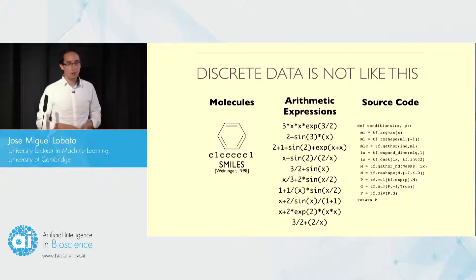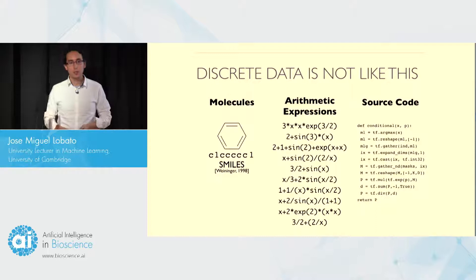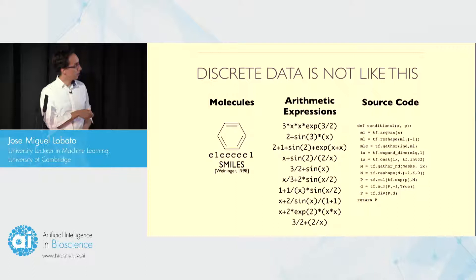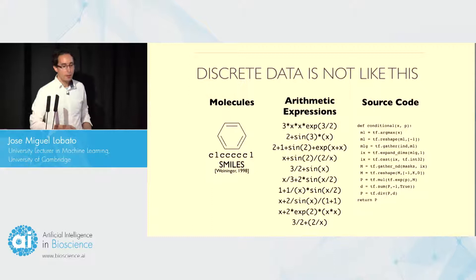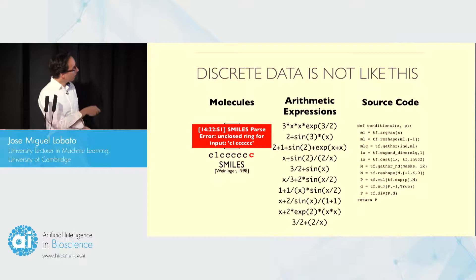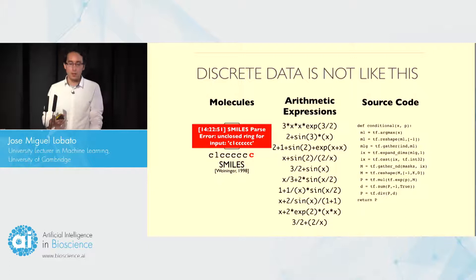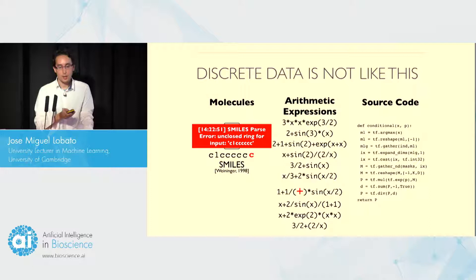This type of problem, however, is very significant when we try to generate discrete data. For example, discrete elements such as molecules, which we can encode as a sequence of characters using a language called SMILES. We have other elements such as arithmetic expressions or even source code in computer programs. In these types of discrete data, whenever our generative model makes small mistakes, the consequences can be very significant. In the case of molecules, if we change just a single character, we won't be able to obtain a valid molecule.